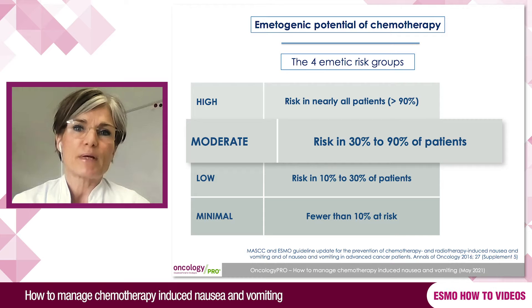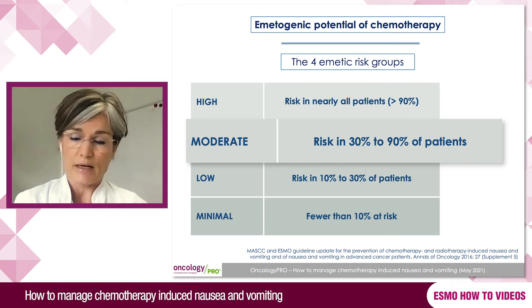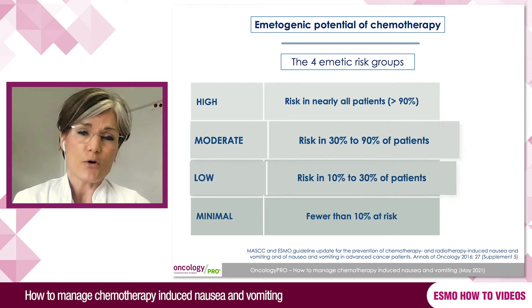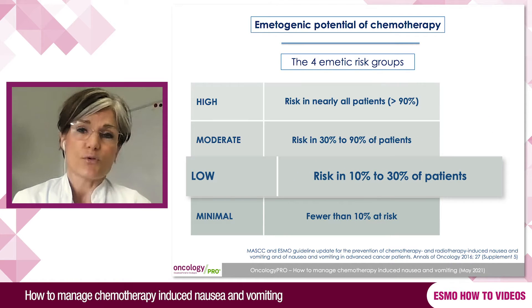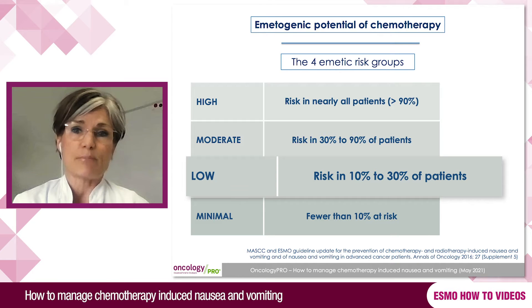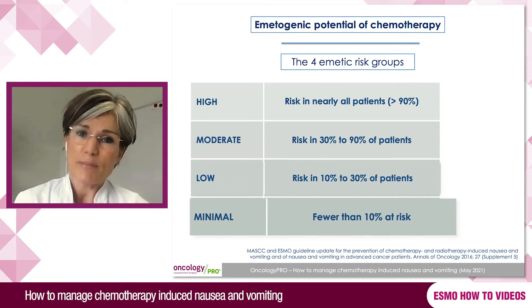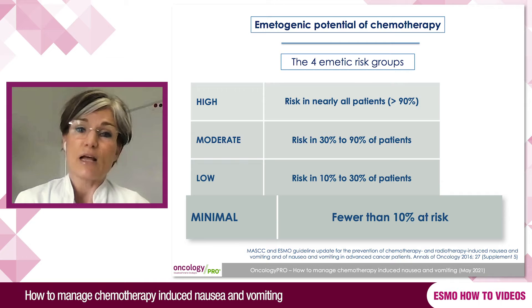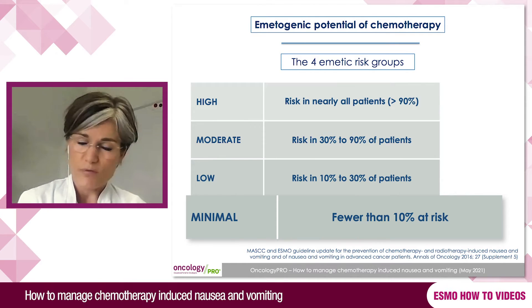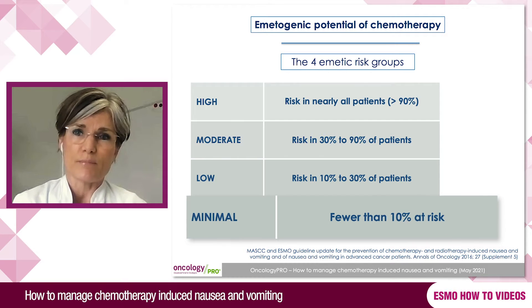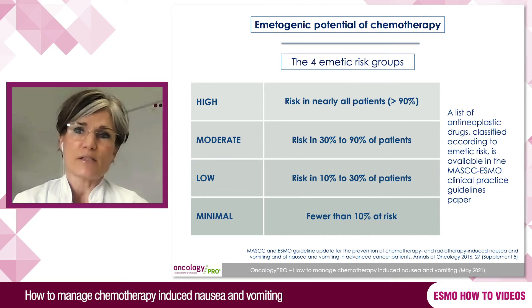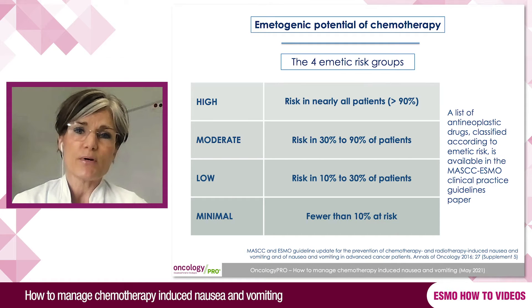Moderately emetogenic chemotherapy means that 30 to 90% of patients will vomit, and an example is oxaliplatin. Minimal emetic risk means that less than 10% of patients will vomit if no antiemetic prophylaxis is provided. You can find a list of all antineoplastic drugs in the guidelines paper, divided into the different risk levels.